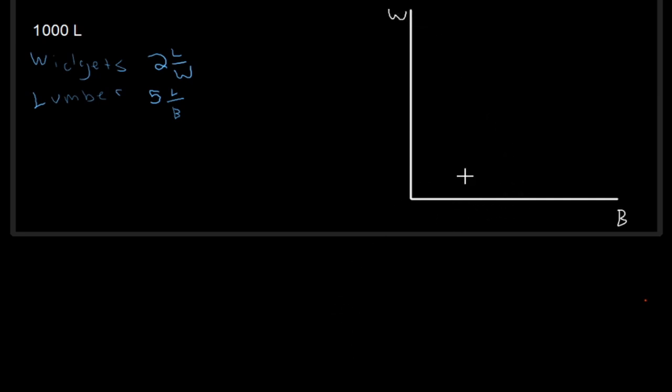In order to finish this production possibility frontier, what I'm going to need to figure out is how many widgets I could produce if I put all 1,000 of these workers into widget production. Very similarly, I need to figure out how many board feet I could produce if I put all my 1,000 workers into lumber production. So, let's go about doing that. And I'm purposely going to mess this up at first because I'm purposely going to make the mistake that I'm sure many of you will end up making. And that is to attack this question in the identical way we attacked the last question.